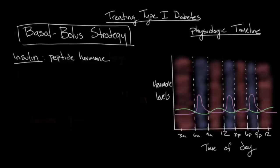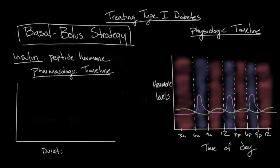There are many different types of insulin available for use in the treatment of diabetes. They are classified based on how quickly they take effect, which is known as the onset of action, and how long they work for, which is known as the duration of action. To get a better understanding of this, let's create another graph similar to this one that we'll call the pharmacologic timeline. On the x-axis here, we'll put that duration of action.